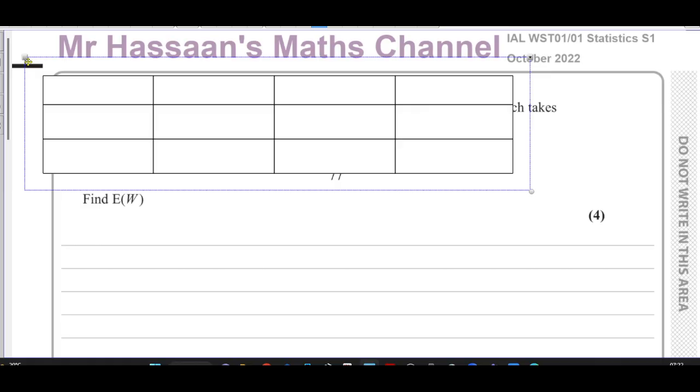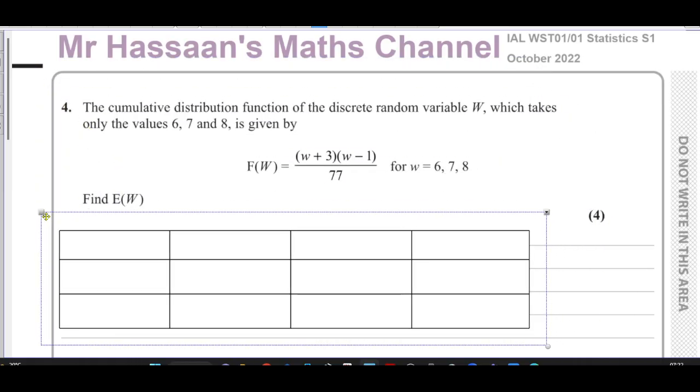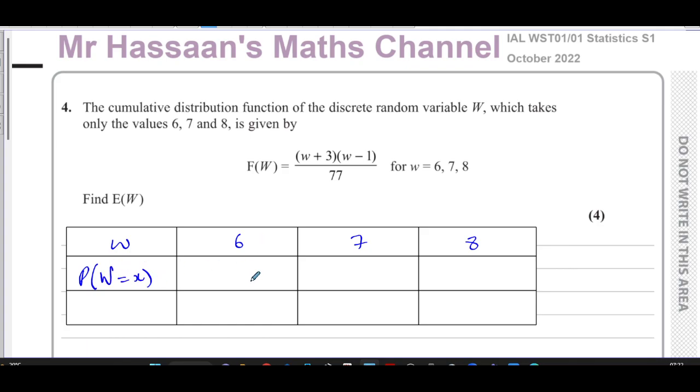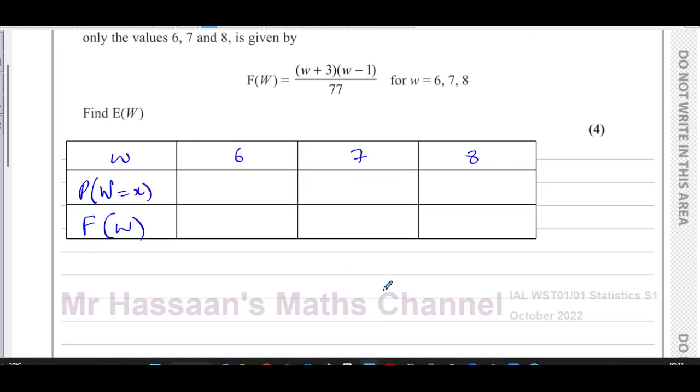I'll take this table and we're going to use this table to fill in these values. So we've got basically our values for the discrete random variable which are 6, 7, or 8. We're going to here write down the probability of each of these outcomes which we're going to find, and we're going to find F(W) as well. We can find F(W) straight away by using this formula. We can fill in the F(W) part by using this formula.